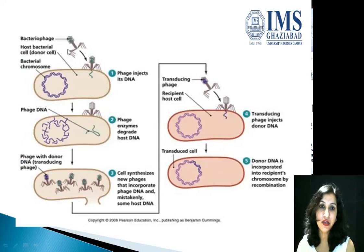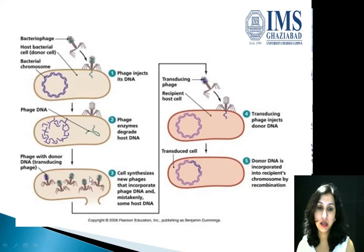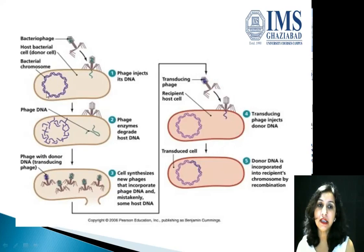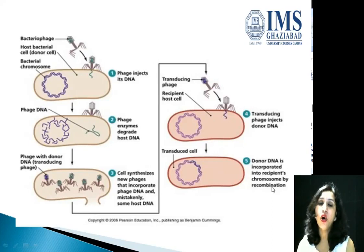In the transduction diagram: a bacteriophage infects a host bacterial cell, injecting its DNA. Phage enzymes degrade the host DNA. The cell then synthesizes new phage DNA and new phage particles, which mistakenly incorporate some host DNA — these are called transducing phages. The transducing phage infects another bacterium, and through recombination, the donor bacterial DNA is incorporated into the recipient's chromosome. The bacteriophage acts as a carrier, transferring bacterial DNA from the donor to the recipient.